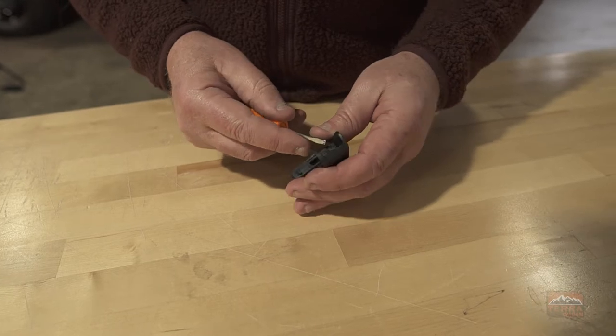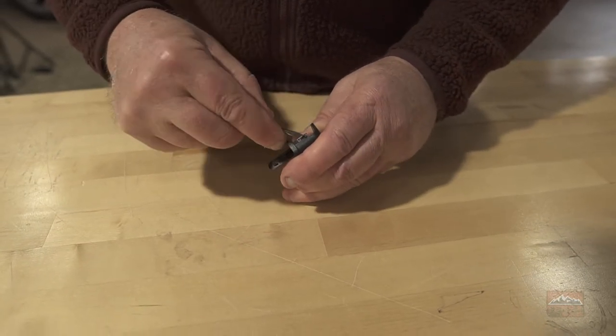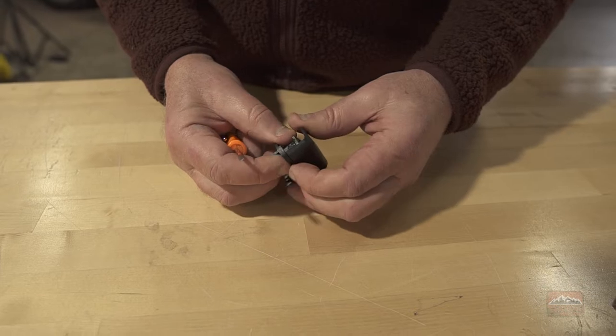Then you'll need to separate the two pieces with a flathead screwdriver. Carefully pry them apart and it'll come loose just like this.